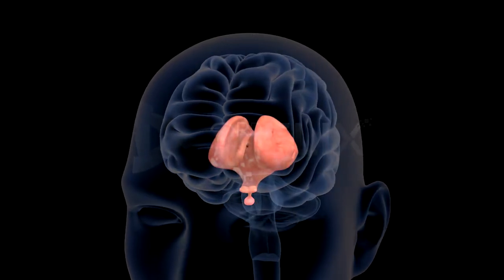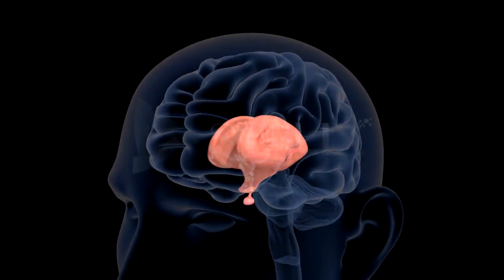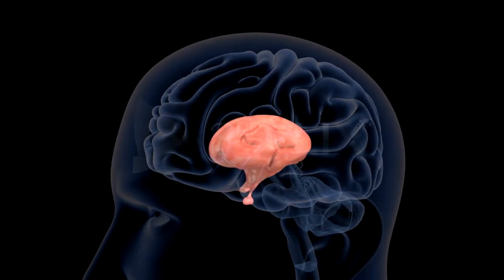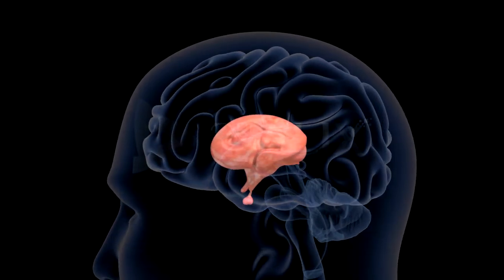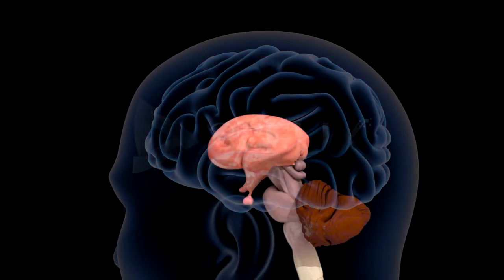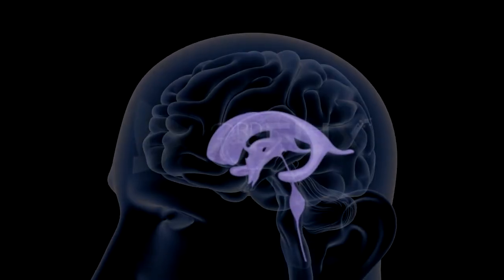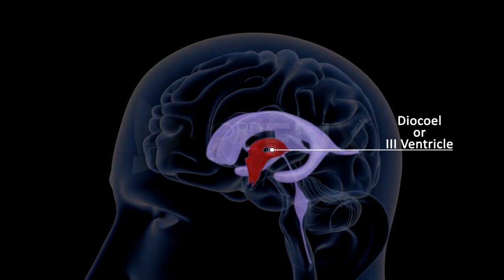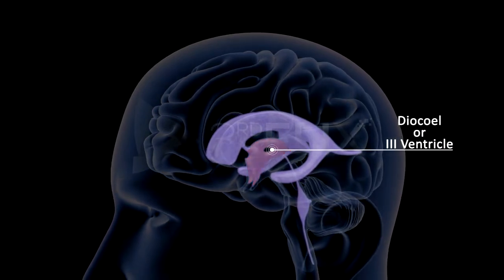Diencephalon, thalamincephalon. It is the unpaired part of the forebrain. It is dorsally overlapped by the cerebrum. It encloses a cavity referred to as the diocele or third ventricle.